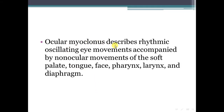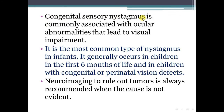Ocular myoclonus describes rhythmic oscillating eye movement accompanied by non-ocular movement of the soft palate, tongue, face, pharynx, larynx, and diaphragm. Congenital sensory nystagmus is commonly associated with ocular abnormalities that lead to visual impairment. It is the most common type of nystagmus in infants, generally occurring in the first six months of life in children with congenital or perinatal vision defects. Neuroimaging to rule out a tumor is always recommended when the cause is not evident.